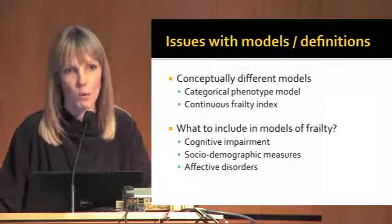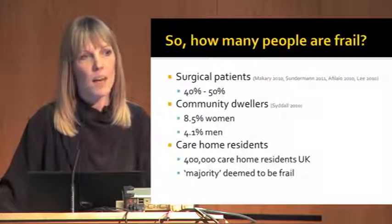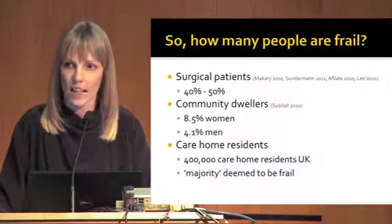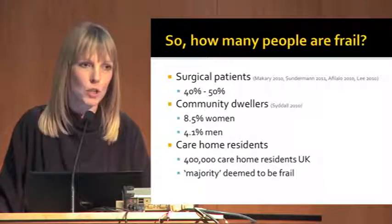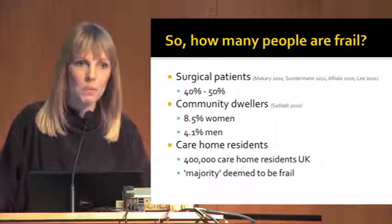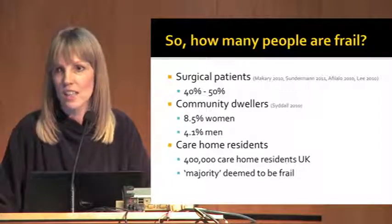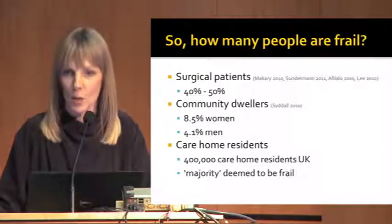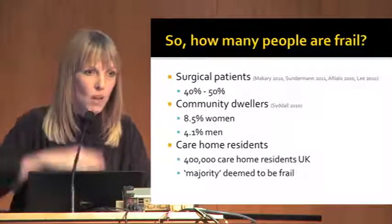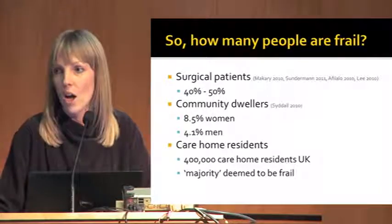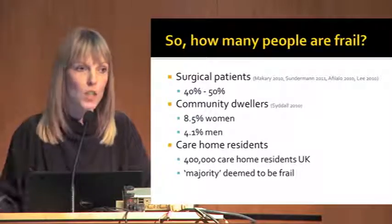Looking at studies in elective surgical patients, somewhere approaching half of patients presenting for elective non-cardiac and cardiac surgery are going to be frail on a variety of different measurement tools. To put this in perspective: less than 10% of 65 to 74 year old community dwellers are deemed frail, whereas in our care home population the majority of residents are frail. So half of patients pitching up for elective surgery being deemed frail really suggests they're quite a vulnerable group - and this is the elective group, never mind the emergency group, who are probably actually a frailer bunch anyway.